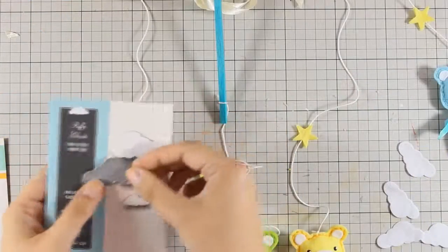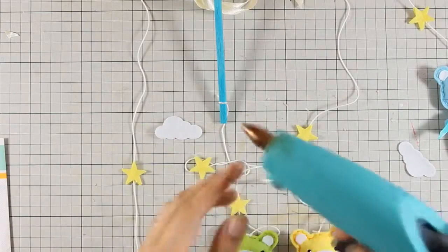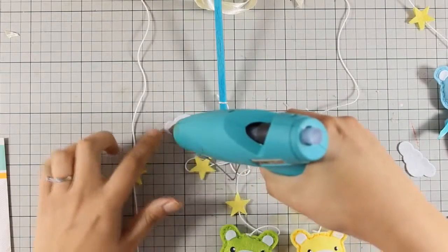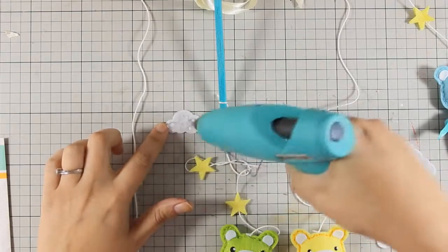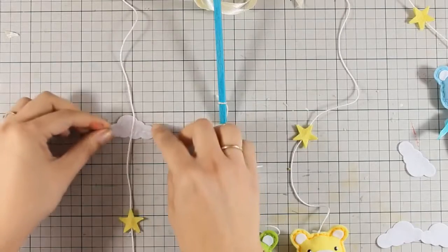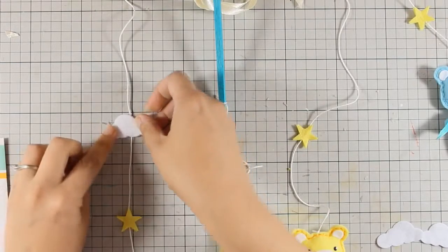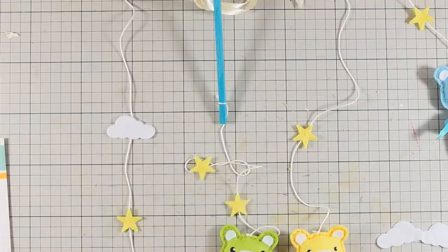I am going to do that for a few of those stars, and I have also cut out clouds with another die and I am just going to do the exact same thing. So you can see that all those elements add even more details on my mobile, but at the same time they are not puffy. However, they look very cute.